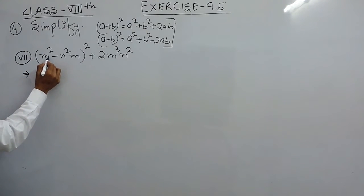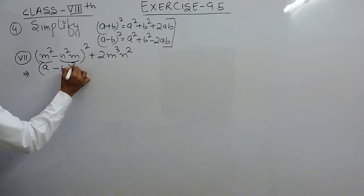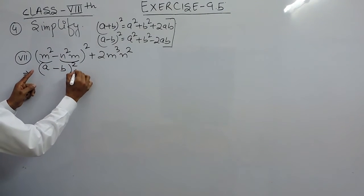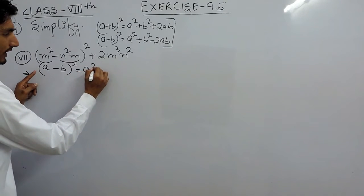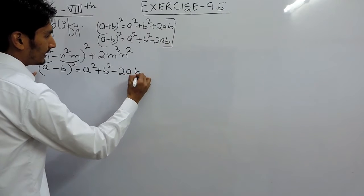If I consider this m² as a and this complete term as b, so this is (a - b)² and if I want to expand this, this can be expanded as a² + b² - 2ab.